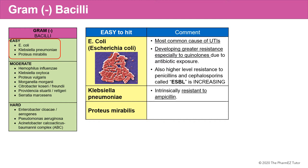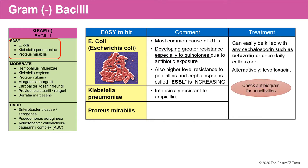We'll talk more about ESBL in a future lecture on multidrug-resistant organisms. Klebsiella pneumoniae and Proteus mirabilis are fairly easy to hit; however, Klebsiella is intrinsically resistant to ampicillin. As far as treatment, most of these bacteria can easily be killed with any cephalosporins such as cefazolin or once-a-day ceftriaxone. Alternatively, levofloxacin can be used with the exception of resistant E. coli. It's very important to check the antibiogram in your area for appropriate sensitivities.